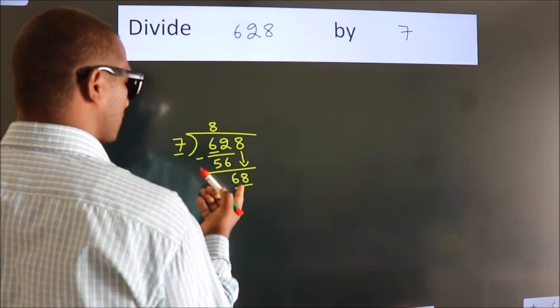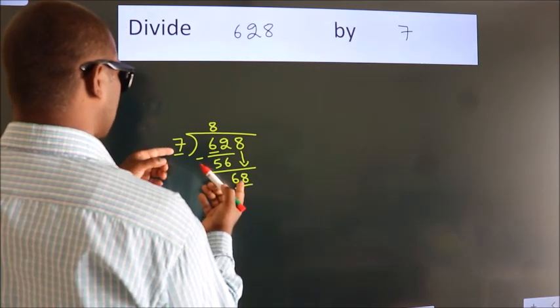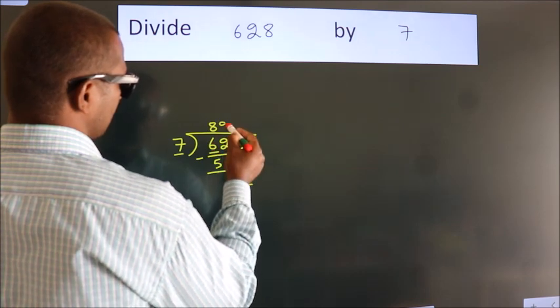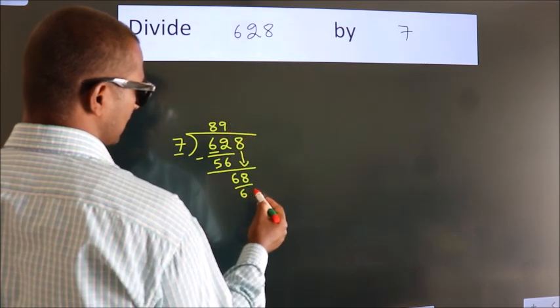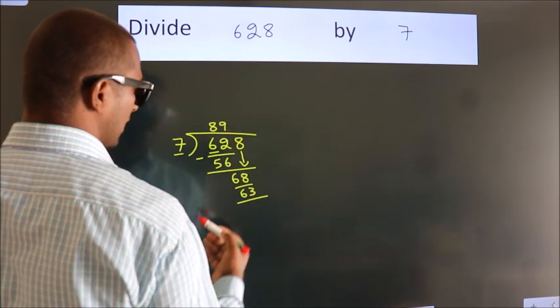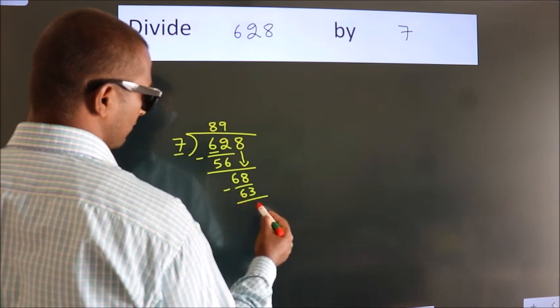A number close to 68 in the 7 table is 7 times 9, which is 63. Now we subtract. We get 5.